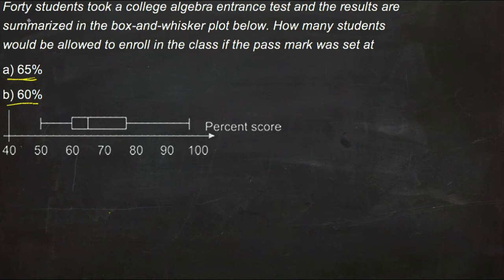The first thing that's important here is to note that there were 40 students who took the exam. This means that this plot right here, this group of numbers from the lower extreme, which is the lowest number, looks like 50%.